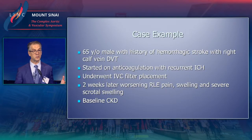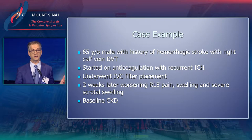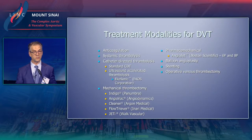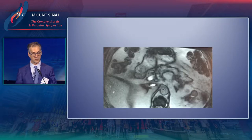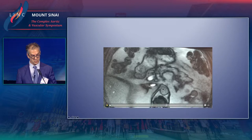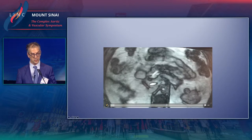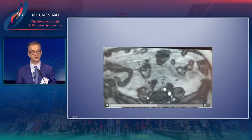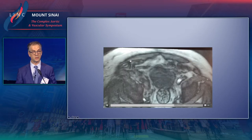Here, a patient who had a prior IVC filter placed two weeks before her symptoms started — he actually got that filter for a very minor DVT, then proceeded to clot everything off. He had baseline chronic kidney disease, so we did an MRA without contrast. You can see a great example of bilateral iliac DVT as well as IVC thrombosis.